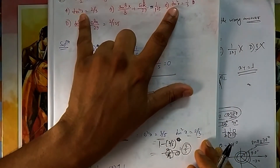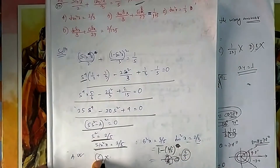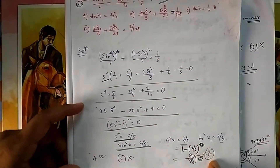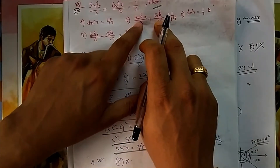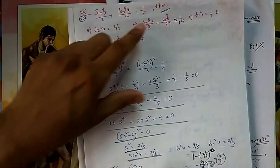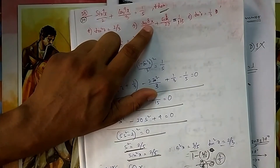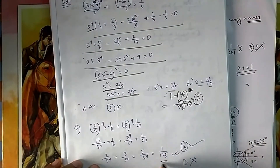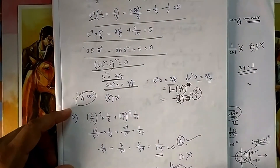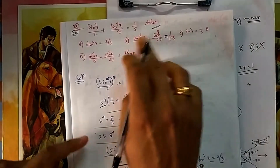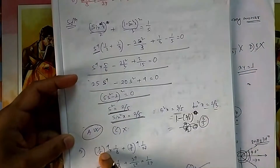Both options A and B need to be verified. With sin²x = 2/5 and cos²x = 3/5, compute sin⁸x = (2/5)⁴ = 16/625 and the corresponding cos term (3/5)⁴ = 81/625 — combining gives 1/25, confirming option B is correct. Option D is not correct. So the final answers are A and B, both correct in this multiple correct answer question.